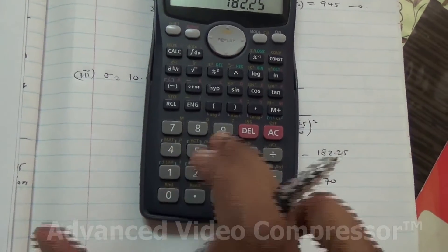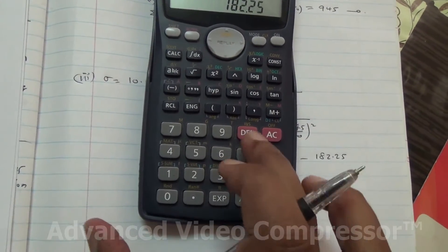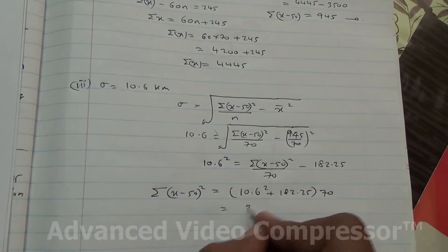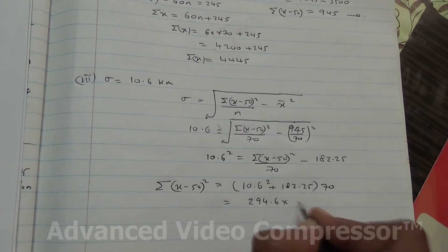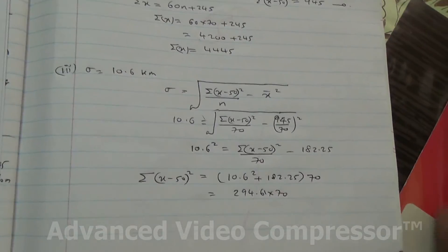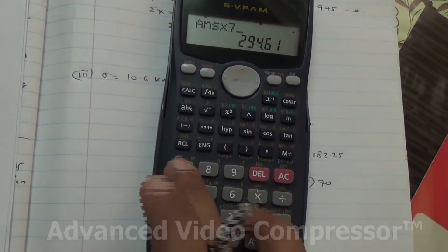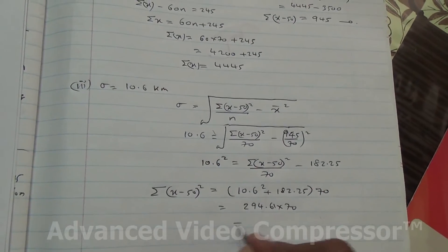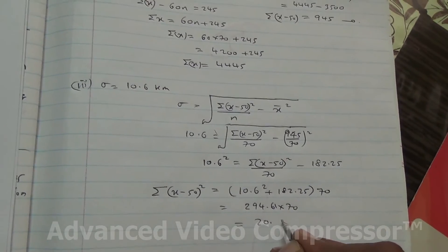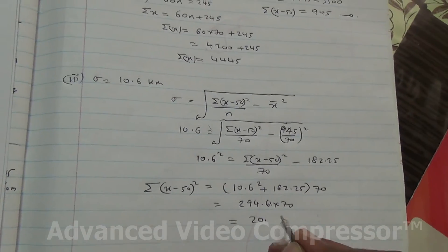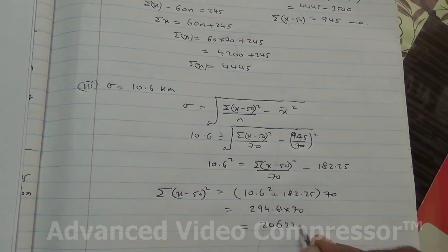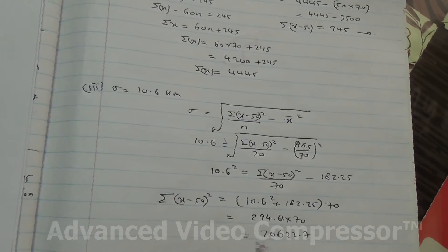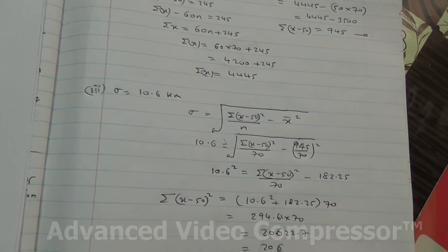So what is that then? That's 10.6 squared. It's going to give us 294.61. 294.61 times 70 is going to give us 20,622.7. So that's going to be 20,623.